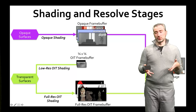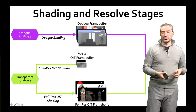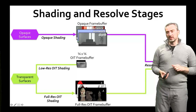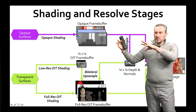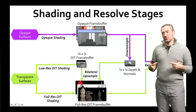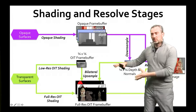Full-resolution surfaces like glass need to be rendered at full resolution and go into a separate frame buffer storing multiple channels. We then take the opaque frame buffer, downsample the normals and depth, and use those as input for a bilateral upsampler to resolve everything into the full-resolution frame buffer, then composite into the final image.